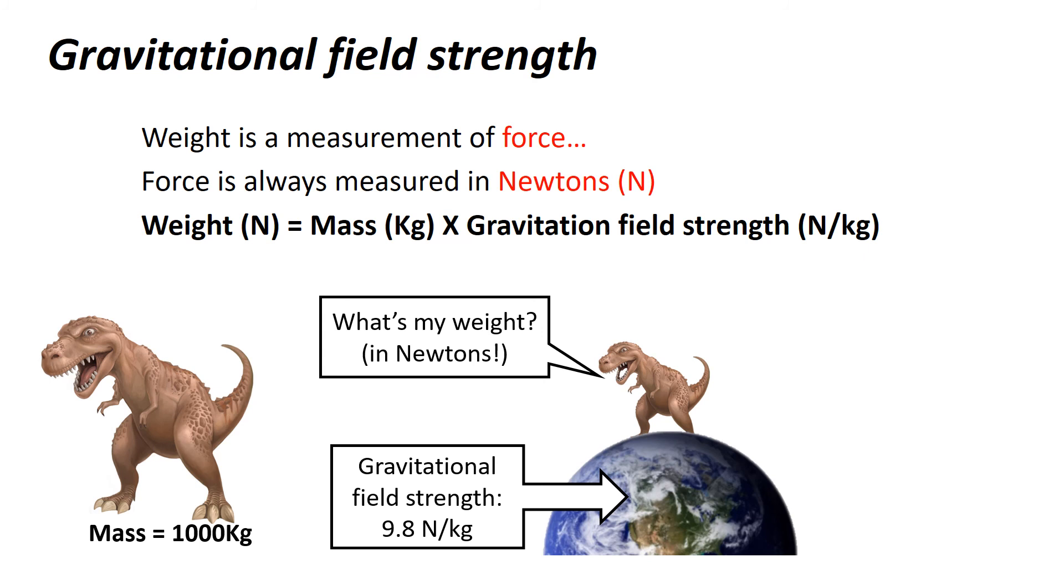Also, be aware this is a bit of a trick question. They ask you why do objects weigh less on different planets? And be aware that different planets have different gravitational field strengths. It isn't the fact that you have less mass. The mass of my dinosaur would be the same on the moon as it would be on Earth. However, the weight of my dinosaur would be less on the moon because the gravitational field strength is smaller.